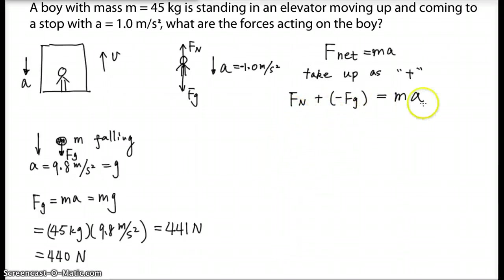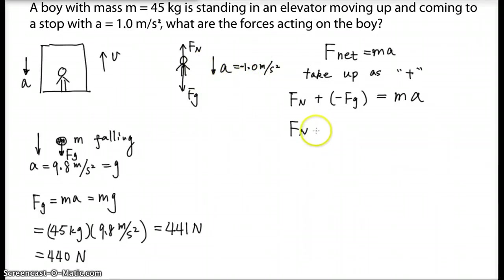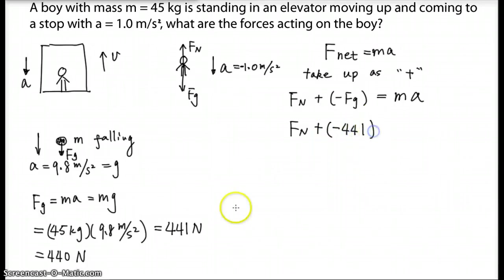With the formula, we can plug in the information we know. Fn is the normal force we want to find — don't assume Fn is the same as Fg; they differ depending on the situation, and here the acceleration makes them different. So: Fn plus (negative 441) equals 45 times (negative 1). I keep the unrounded value of 441 as a habit — only rounding at the final step.